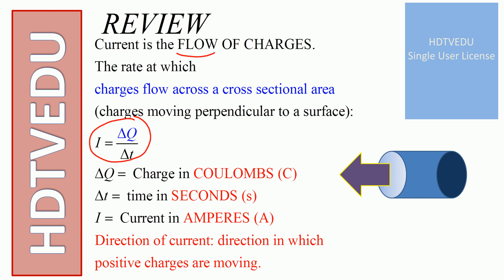What is delta Q? Charge in Coulombs. The unit of Coulombs is capital C. What is time? Time is in seconds. What is I? Current in amperes, A. The direction of current is the direction in which positive charges are moving.